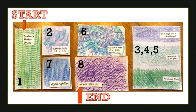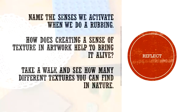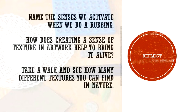You could put numbers on them — one, two, three, four, five, six, seven, eight — so you know what your path was. When you're finished with this activity, take a minute to reflect on it. What senses did you use when you were doing the rubbing? How does creating a sense of texture in artwork help to bring it alive for the person looking at it?